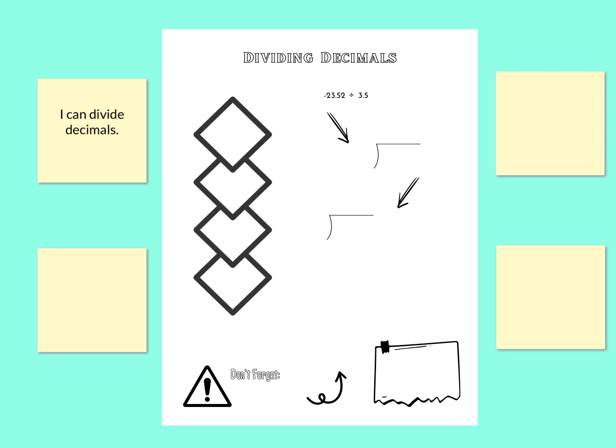Let's take a look at how we divide decimals, specifically if we have integers involved. For example, we've got this negative 23.52, and we're dividing that by 3.5.